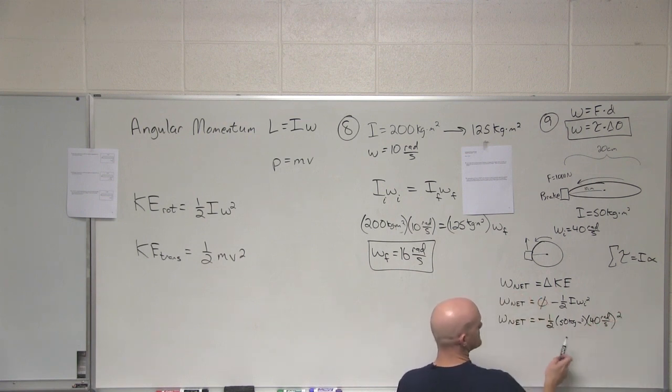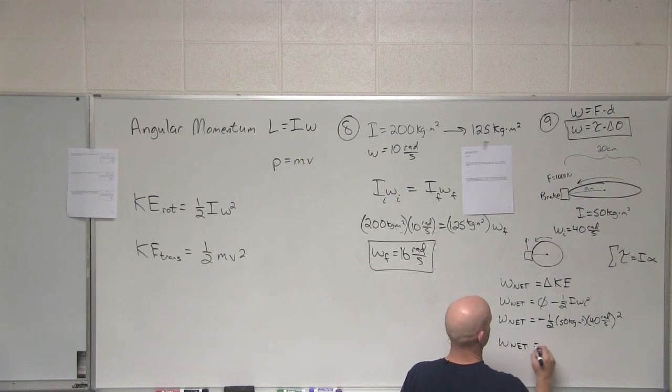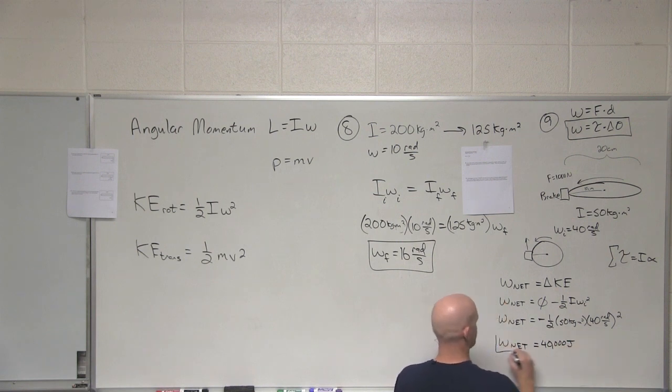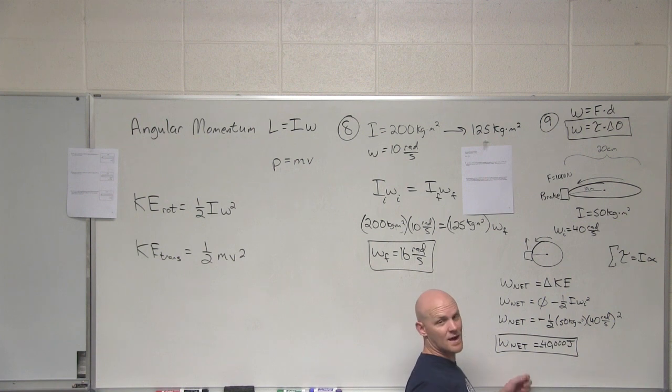40 squared is 1,600 times a half. 800, 800 times 50. Yeah. Awesome. I lost my negative sign. Negative 40,000 joules. Great. We would have got the same answer if we did it the other way. There would have just been a lot more work. Thank you.